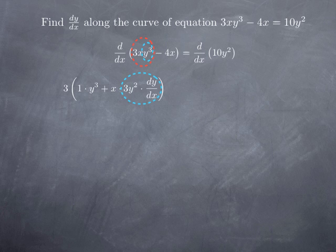We get y plugged inside the cubic function. According to the chain rule, we get the derivative of the outside function — which is x cubed — evaluated at the inside function y, giving us 3y squared. But then we multiply by the derivative of the inside function, which is y, so we multiply by dy over dx.